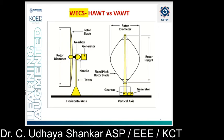The main advantages of VAWT include: first, it can accept wind from any direction, so there is no need for any adjustment using yaw control or pitch control to orient the rotor towards the wind direction. Another advantage is that the gearing and generators are located at ground level, making maintenance very easy.